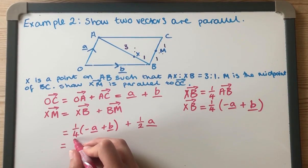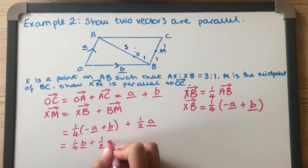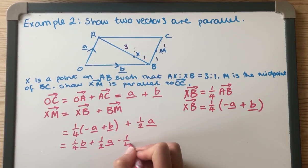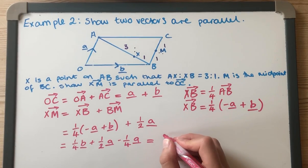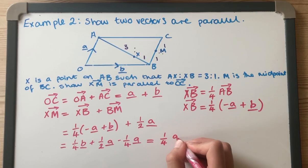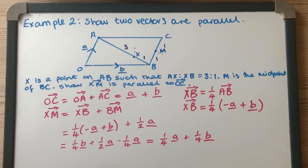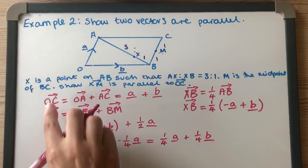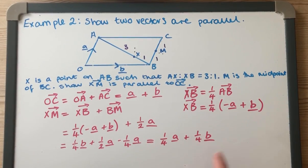So that ends up being - we've got a quarter B plus half of A minus a quarter of A, which ultimately gives us a quarter A plus a quarter B.